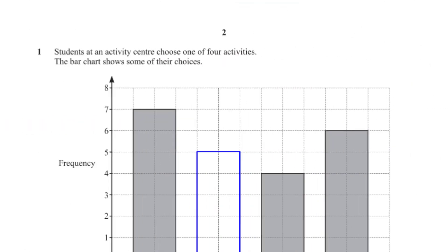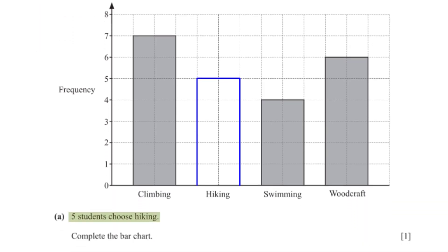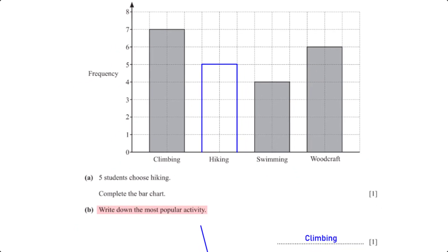Students at an activity center choose one of four activities. The bar chart shows some of their choices. Five students choose hiking. To complete the bar chart, we draw the bar for hiking to have the same width as the rest of the bars and a height of five. The most popular activity is the activity whose bar is the highest, and that is climbing.